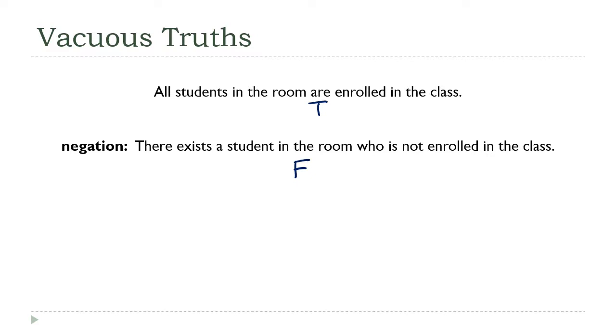So let's take that idea a step further. Take a look at this universal conditional statement: for every negative number, if the number is greater than three, then it's prime. Now we know from our earlier discussion that a universal statement is true if and only if the predicate is true for every value in the domain.